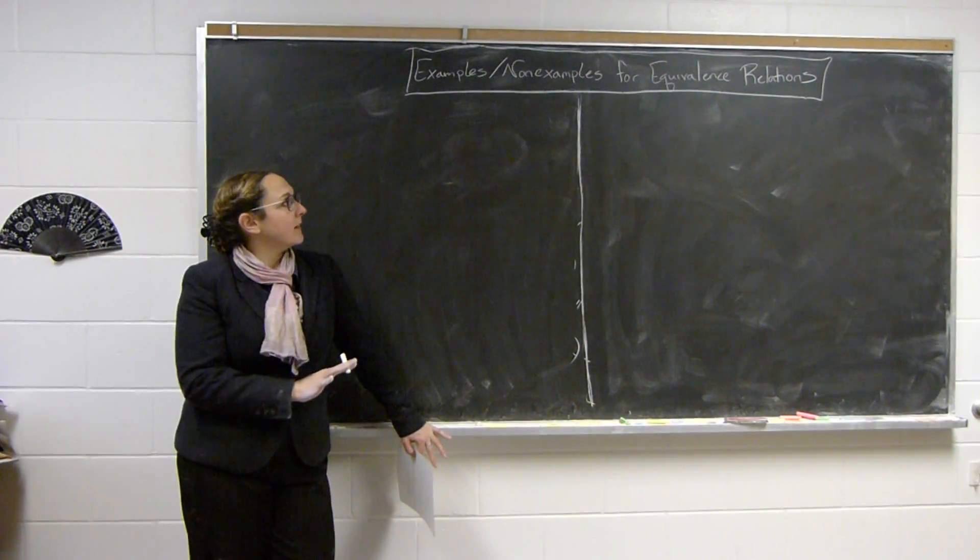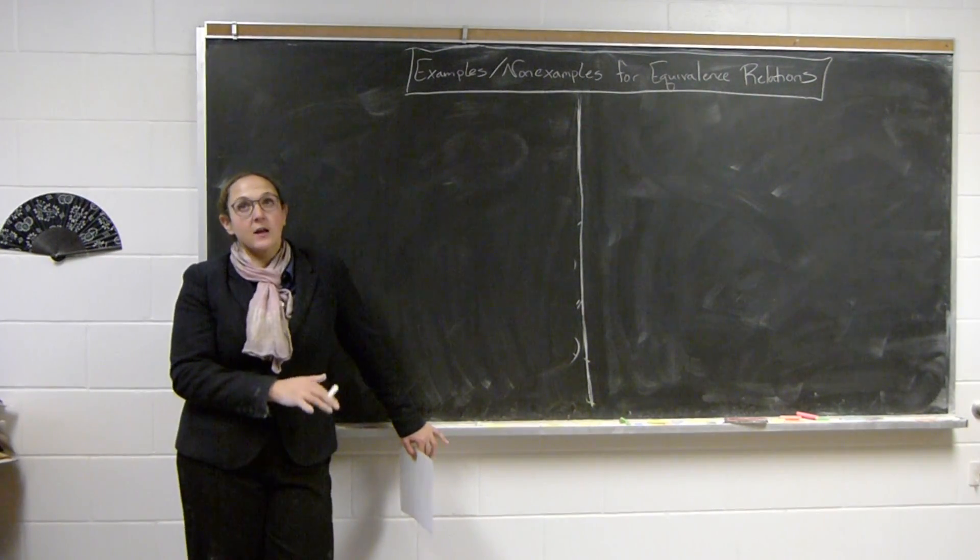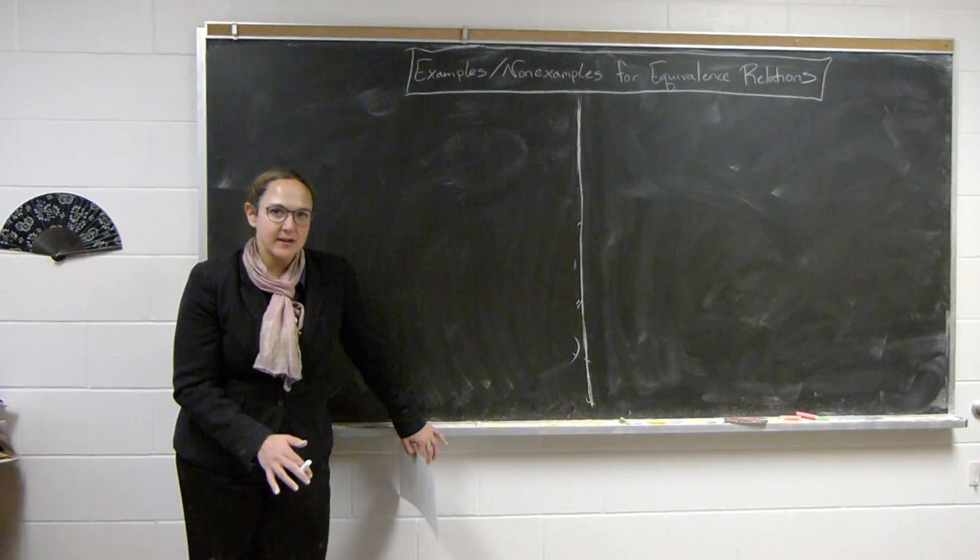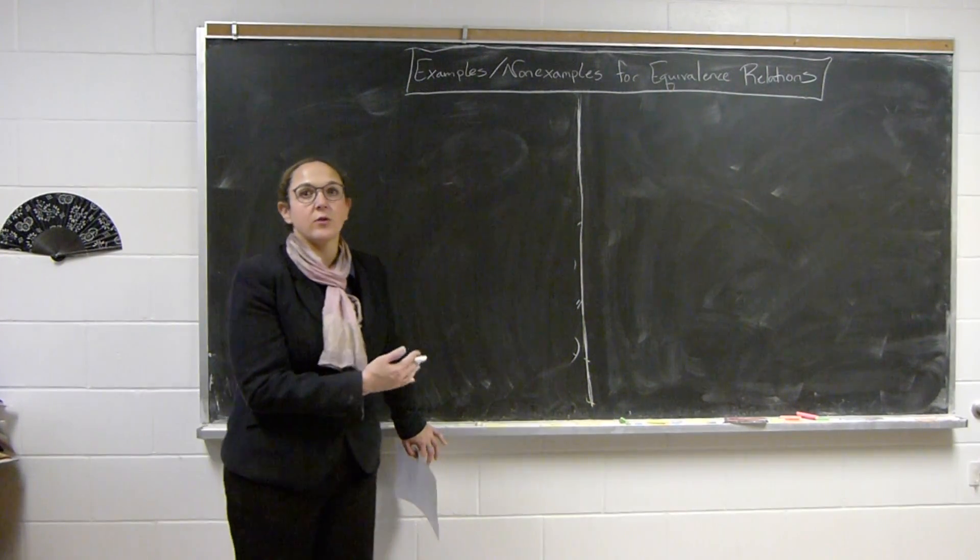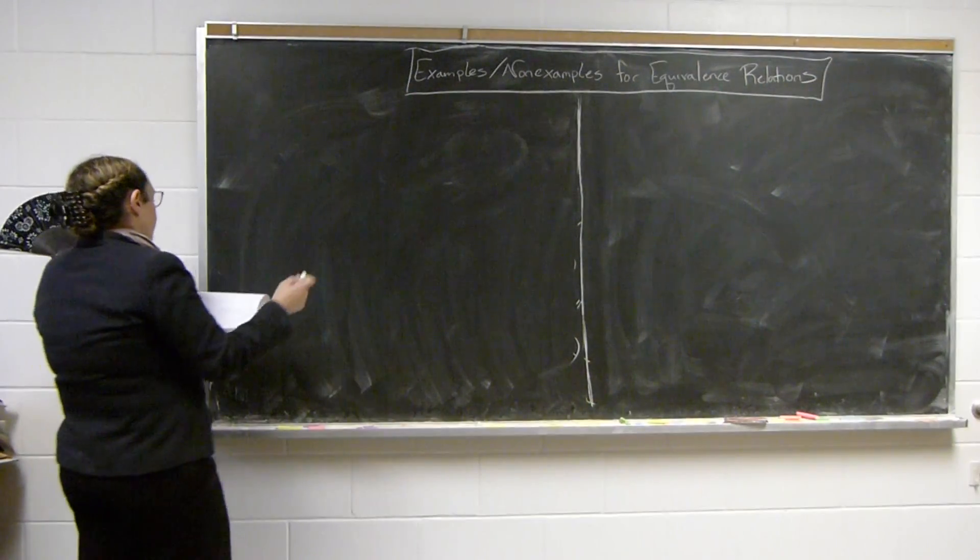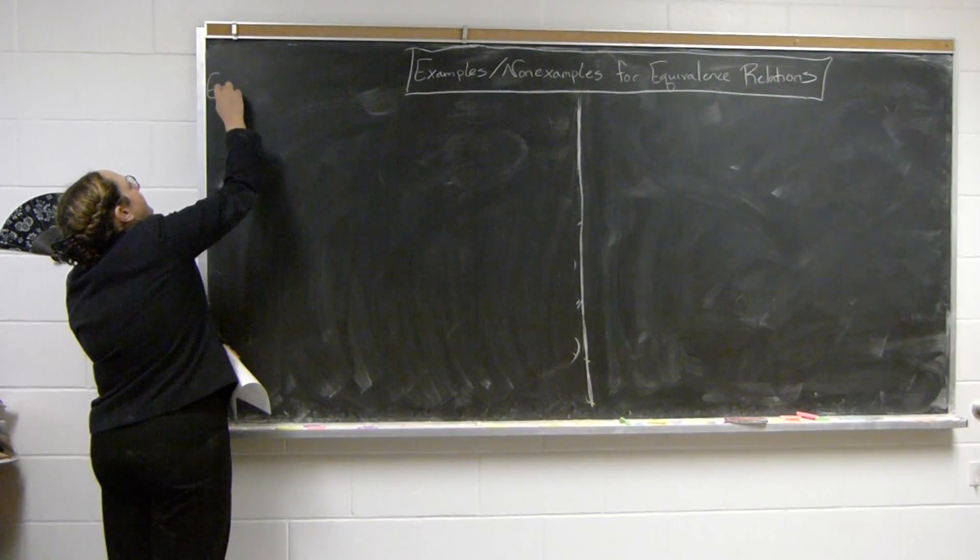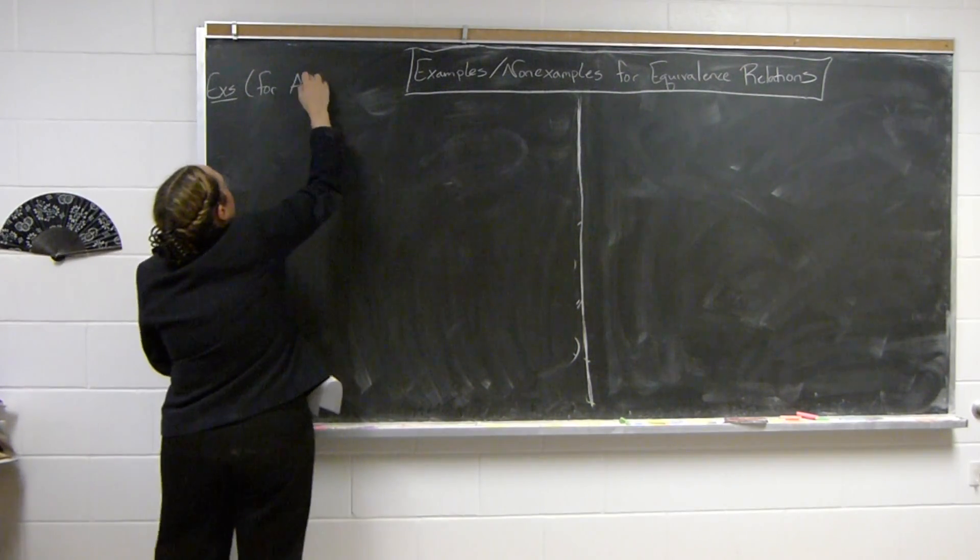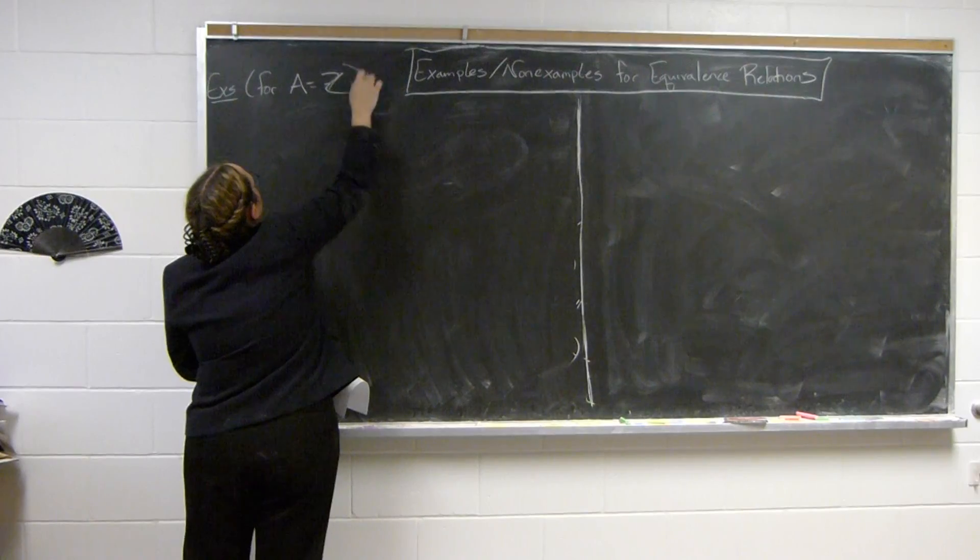So I want to kind of focus on different relations and which of those properties they do or don't satisfy and thus also whether they're equivalence relations, but also to isolate how you could have certain properties satisfied and not others. These are examples, and this is for A equals Z, so these are relations on the integers.